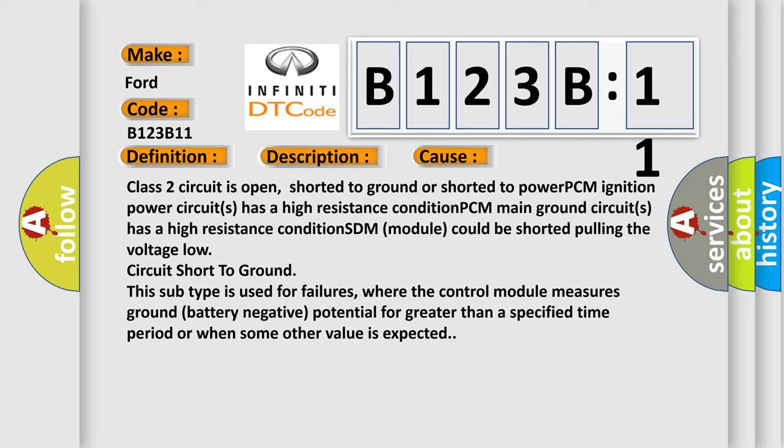This subtype is used for failures where the control module measures ground battery negative potential for greater than a specified time period or when some other value is expected.